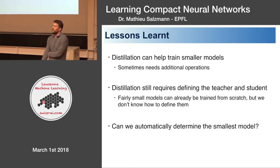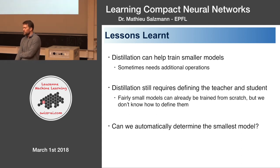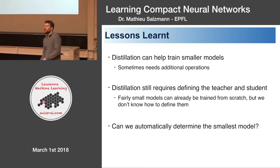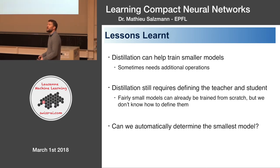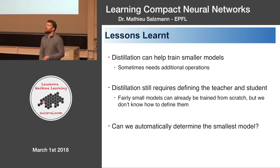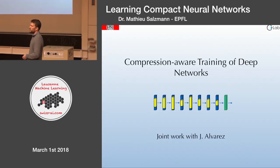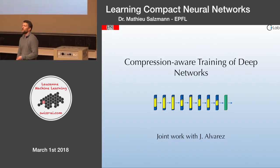So what are the lessons learned from this first approach? Distillation can help train smaller models if you do a few tricks to help it work better. But it still requires defining the teacher and student networks. We've seen that fairly small models can already be trained from scratch, but you still don't know how to define this model — how many units to put in the layers. The next question is: can we automatically determine the smallest possible model for a task at hand?